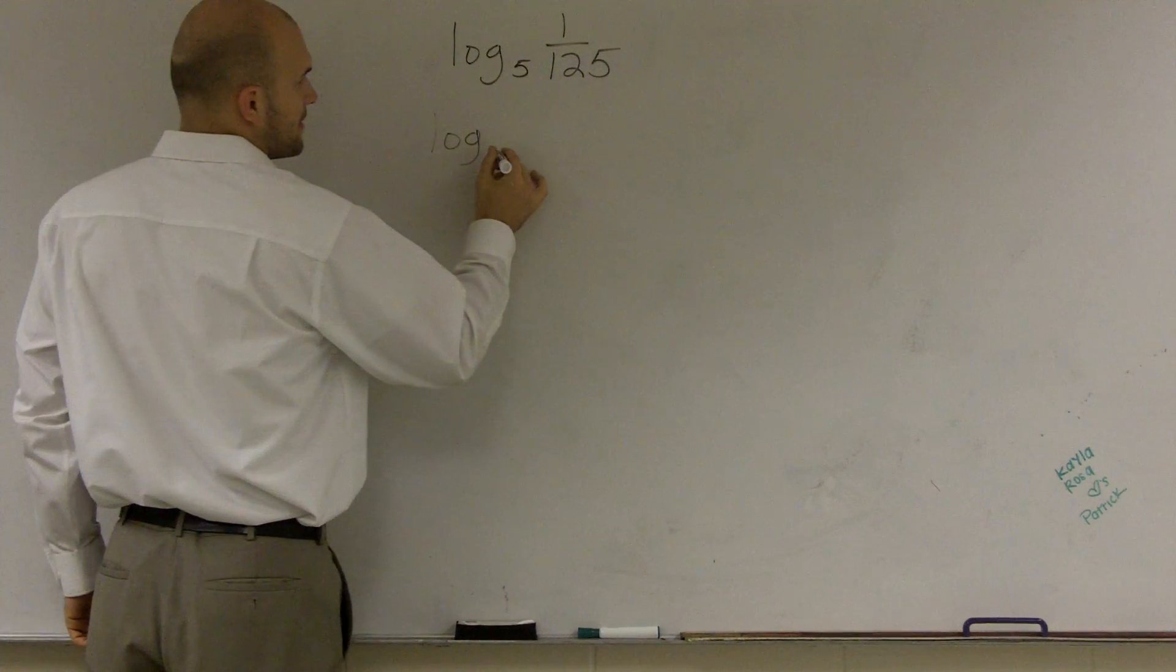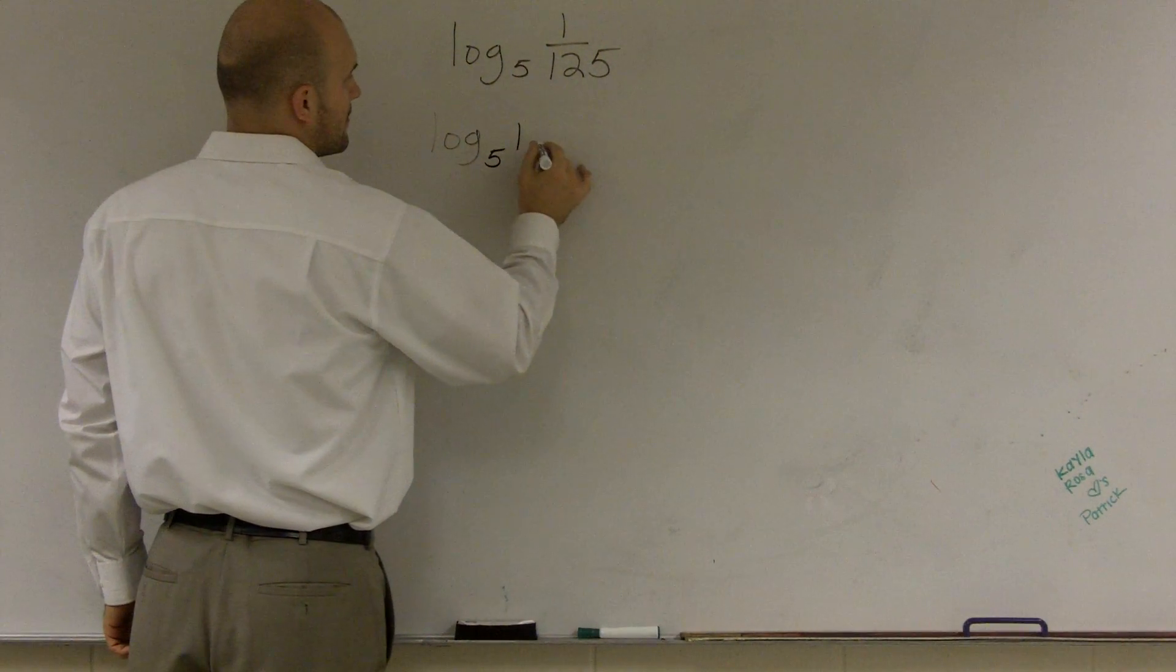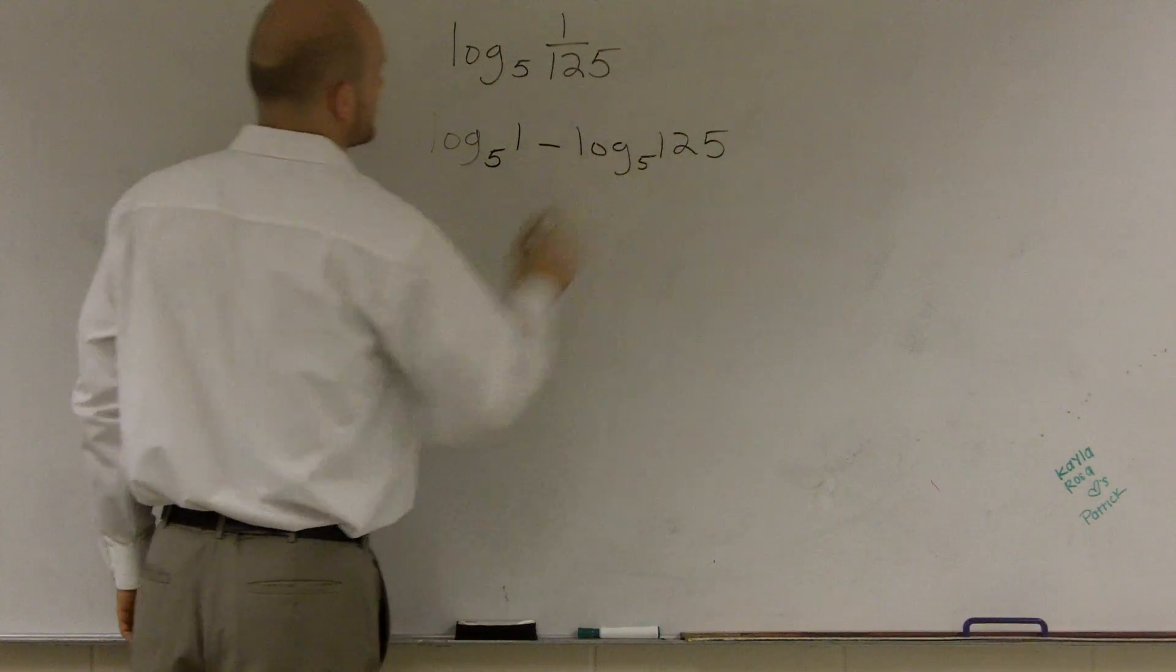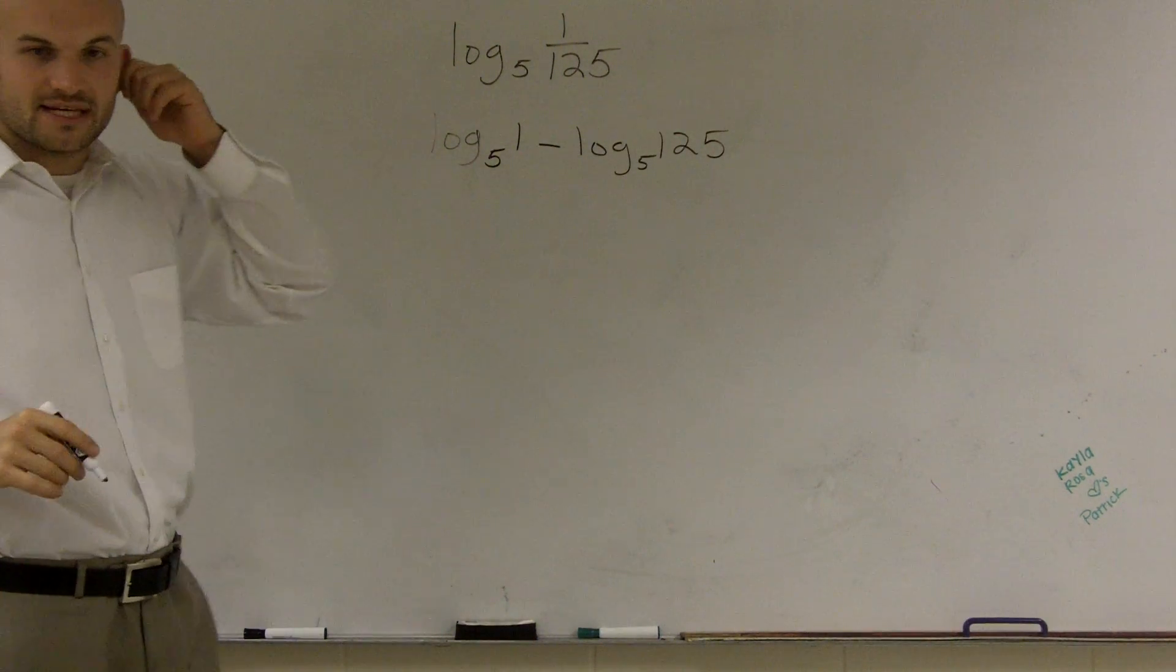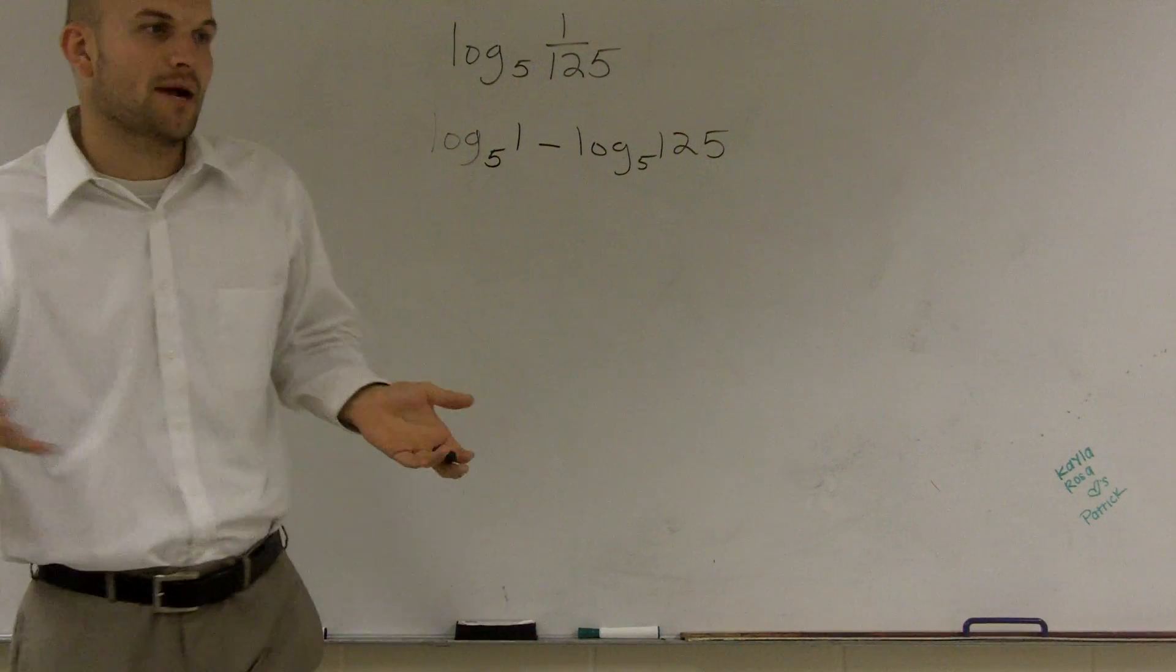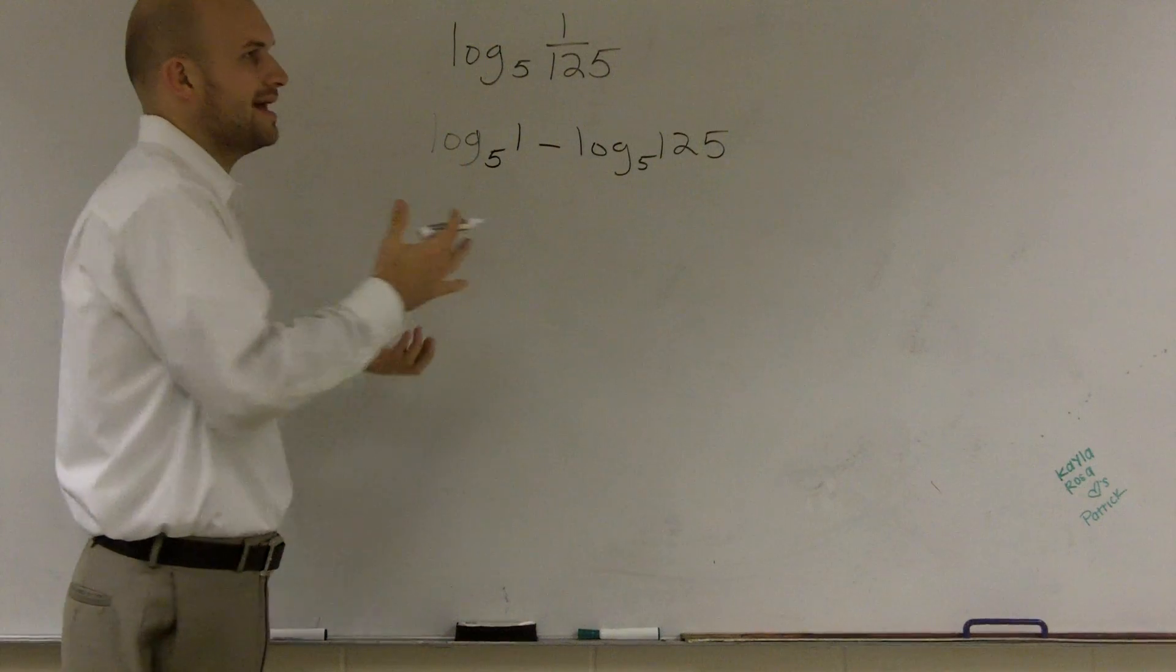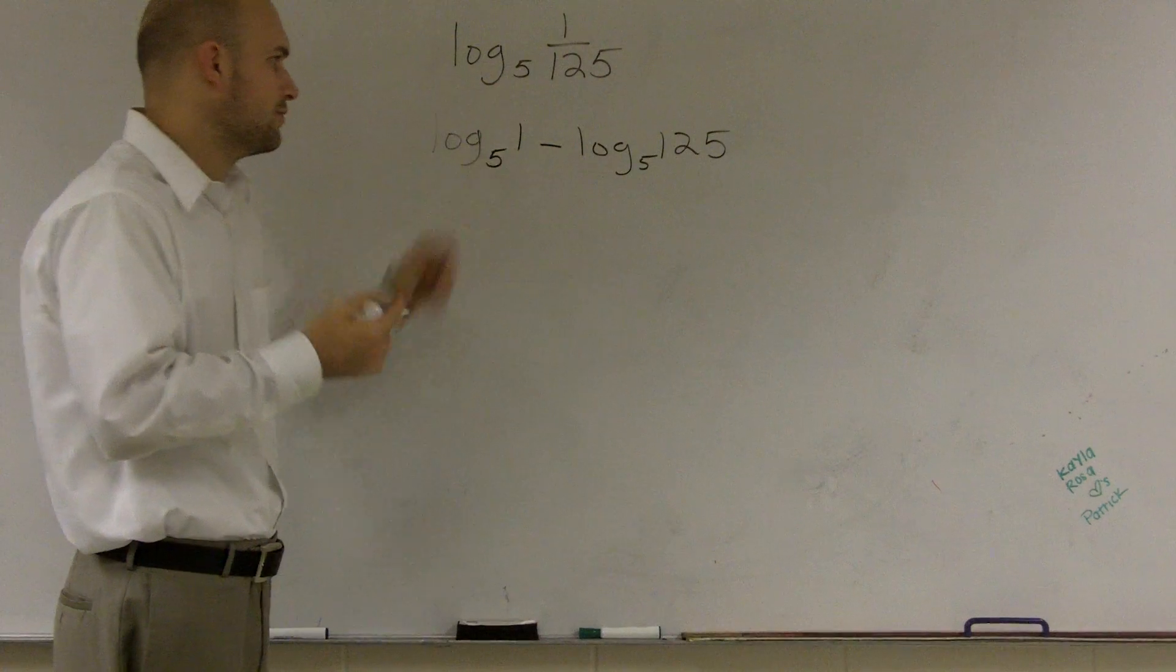So log base 5 of 1 minus log base 5 of 125. Now, you should know that from properties of logarithms, any logarithm evaluated for 1 is going to give you 0 because anything raised to the 0 power gives you 1.